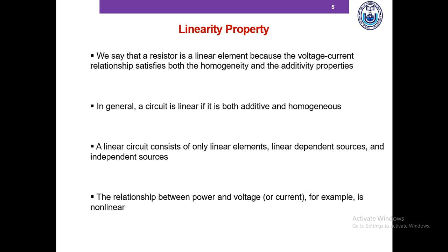What are examples of variables that are not linearly related? Power and voltage, or power and current, are two examples of non-linear relationships. Please pause this video and try to see if power and voltage and power and current obey the additivity or homogeneity property, considering that P equals V squared over R equals I squared R.